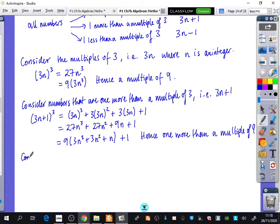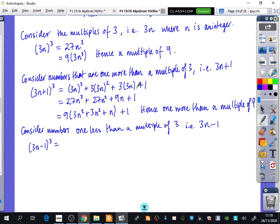We consider numbers 1 less than a multiple of 3, i.e. 3n minus 1. I'm going to cube that number. It's going to be the same as this, apart from it's going to flip some of them. The first one is positive, then negative, then positive, then negative. So it's 27n cubed minus 27n squared plus 9n minus 1. When you factorize that, you get 9 times 3n cubed minus 3n squared plus n minus 1, the extra minus 1 at the end. Hence, 1 less than a multiple of 9.